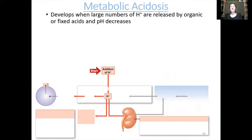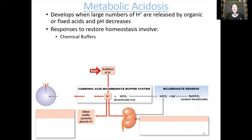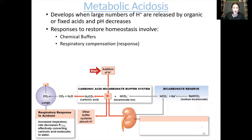Metabolic acidosis: caused by a shift in pH due to something other than carbon dioxide — some other kinds of acids are being dumped into your blood, so pH decreases. First, the chemical buffers act to restore homeostasis — we have too much hydrogen, so we can use bicarbonate to bind up this extra hydrogen and bring pH back up. We shift the reaction in this direction so our lungs can eliminate that carbon dioxide, keeping the hydrogen bound up in water. We also use other buffer systems such as proteins in our blood to help eliminate this extra hydrogen.